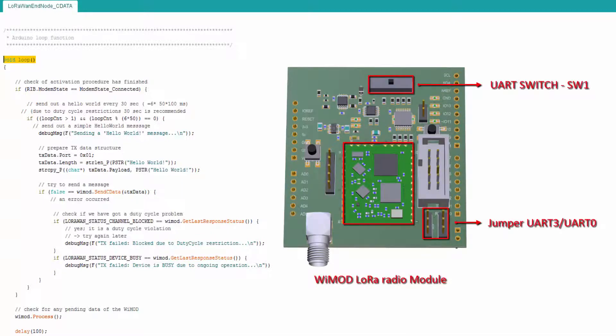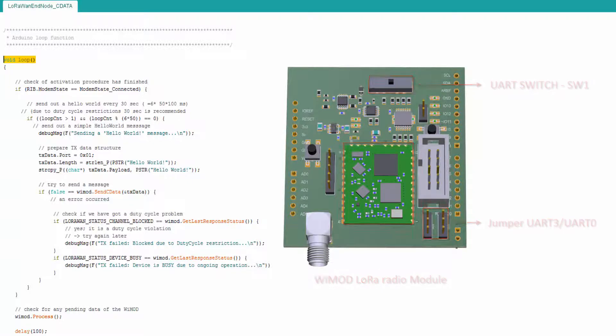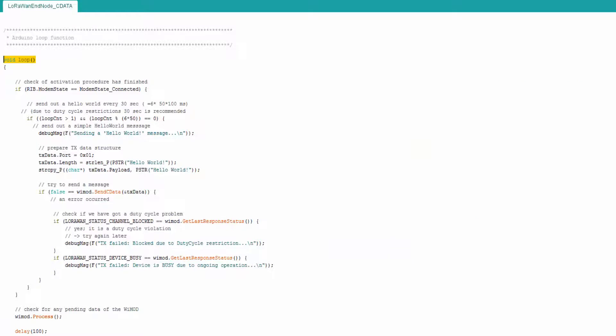It is important to set up the Weimart Shield according to your specific Arduino model. The UART switch — switch 1 — and the UART selection jumpers must be set up correctly. Consult the data sheet for detailed information.